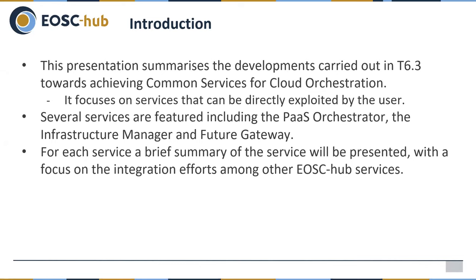This presentation will summarize the developments carried out in Task Silver 3 toward achieving common services for cloud orchestration, focusing mainly on services that can be directly exploited by the user, not internal components. We will show three services: the PaaS Orchestrator, Infrastructure Manager, and the Future Gateway. For each component I will give a brief summary of the service and focus on the integration work we have done to integrate with other EOS Hub components.